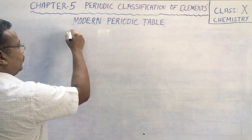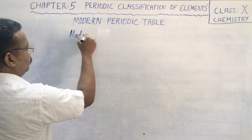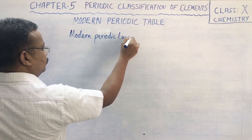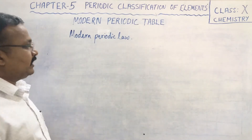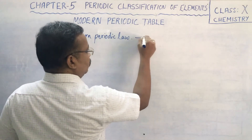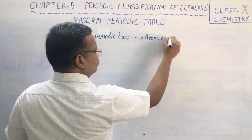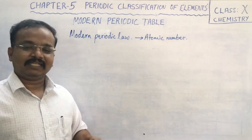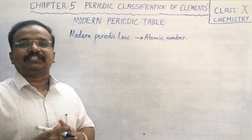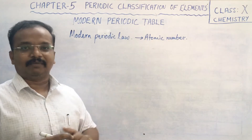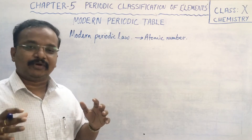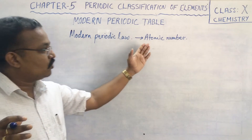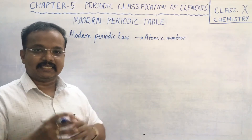According to the modern periodic law, properties of elements are periodic functions of atomic number. The main essence of the modern periodic law is that it is based on atomic number, and elements are arranged in increasing order of atomic number.